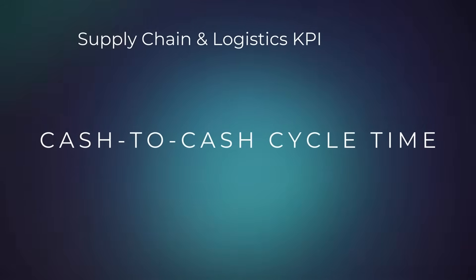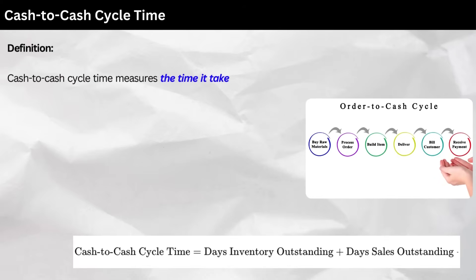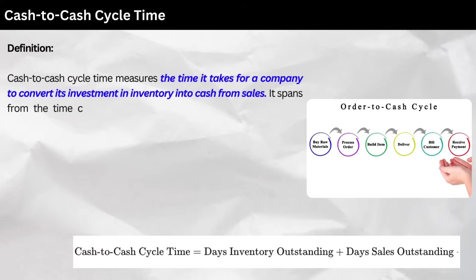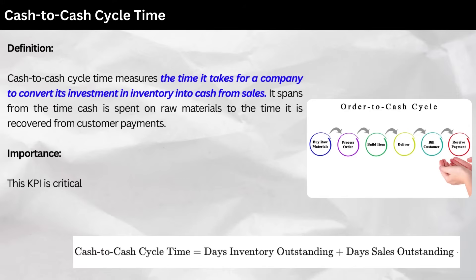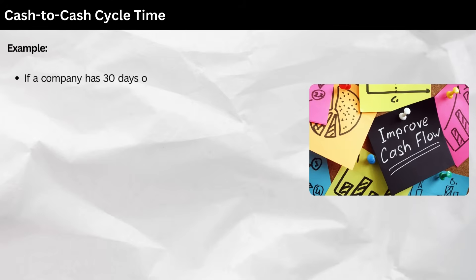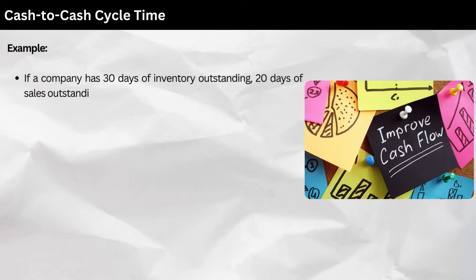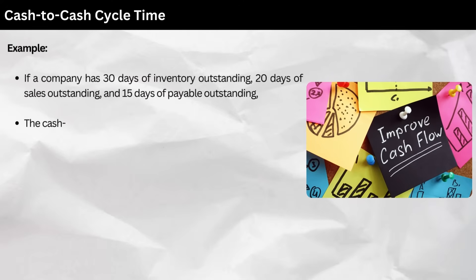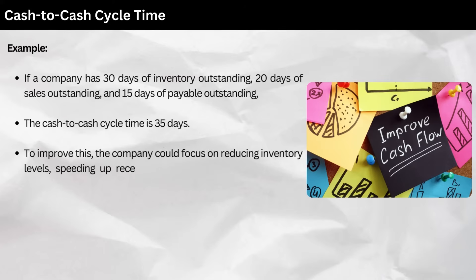6. Cash-to-cash Cycle Time. Definition: cash-to-cash cycle time measures the time it takes for a company to convert its investment in inventory into cash from sales. It spans from the time cash is spent on raw materials to the time it is recovered from customer payments. Importance: this KPI is critical for managing working capital and liquidity. Shorter cash-to-cash cycles improve cash flow and reduce the need for external financing. Calculation: as follows. Example: if a company has 30 days of inventory outstanding, 20 days of sales outstanding, and 15 days of payable outstanding, the cash-to-cash cycle time is 35 days. To improve this, the company could focus on reducing inventory levels, speeding up receivables, or extending payment terms with suppliers.